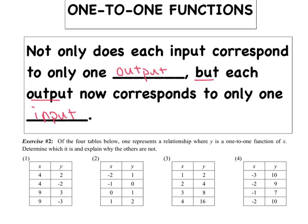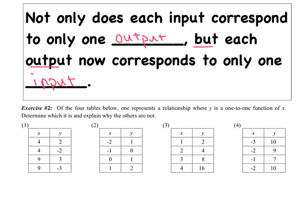Let's analyze these tables. Of the four tables below, only one represents a relation that's actually one-to-one. On the first one, look at the first two ordered pairs — the four maps to not only the two, but also to negative two. Inputs are not allowed to have different outputs, so this is not even a function to begin with.